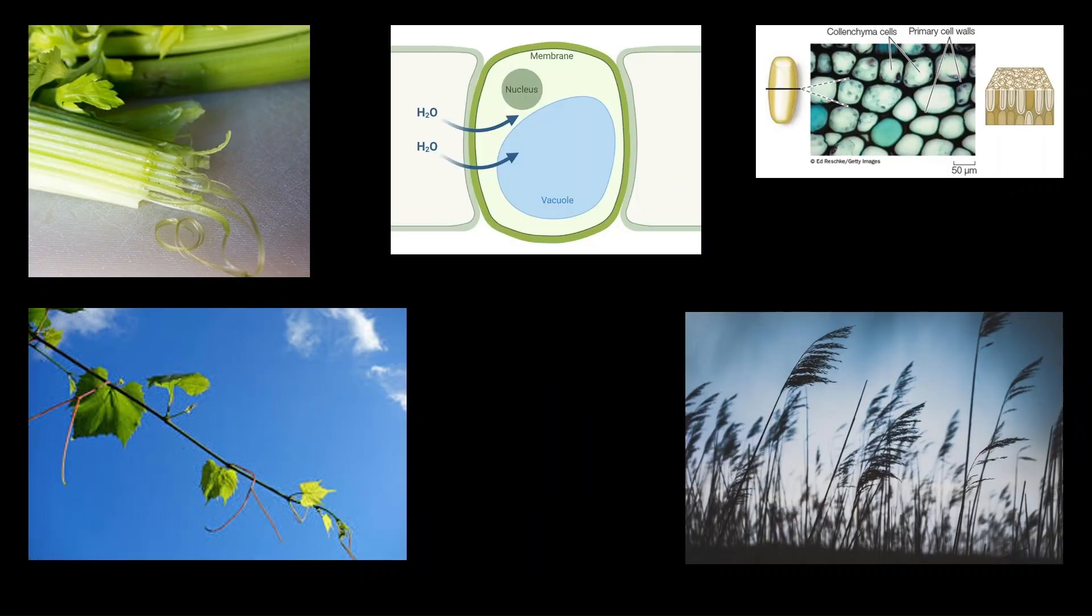Collenchyma cells give mechanical strength to the plant only when the cells are in a turgid state, meaning there is an inflow of water into the cells and the cells are swollen.